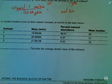All right, let's finish up this worksheet with number seven. A certain element exists as three natural isotopes, as shown in the table below.